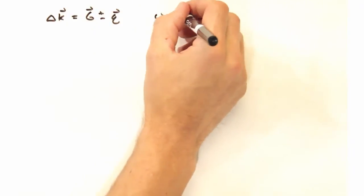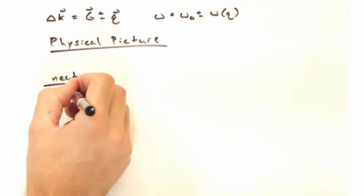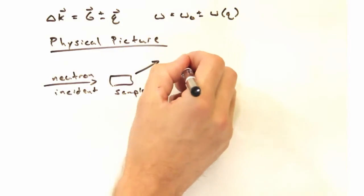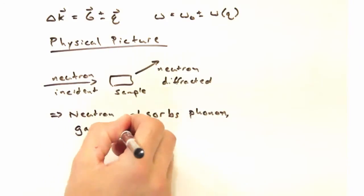So with these two expressions, for delta k and the final omega, let's take a look at the physical picture of what this really means. Say, for example, I've got a neutron incident on my sample, and then it's diffracted off at some angle constructively. In this inelastic case, the neutron potentially absorb the phonon,